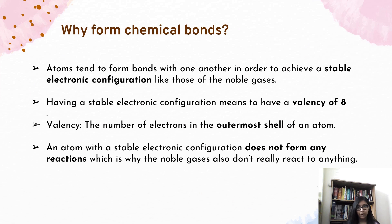Why do atoms form chemical bondings in the first place? The reason is that the atoms would want to achieve the exact same stable electronic configuration like those of the noble gases. Having a stable electronic configuration means to have a valency of 8. Valency is the number of electrons in the outermost shell of an atom. So when we say an atom has a valency of 8, we mean that its outermost shell contains 8 electrons. An atom with a stable electronic configuration does not form any reaction which is why the noble gases also don't really react to anything.